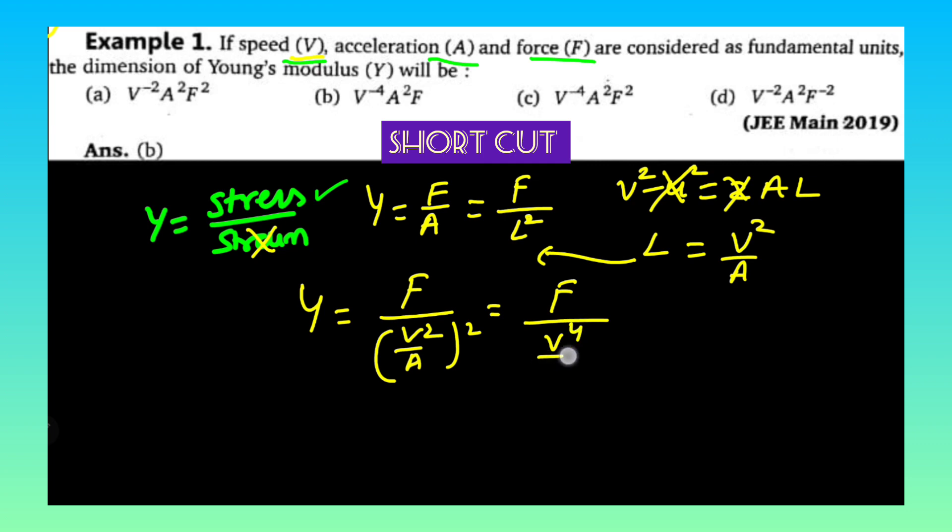Therefore F is equal to v power 4 by a square. So therefore your final answer is going to be F a square v power minus 4.